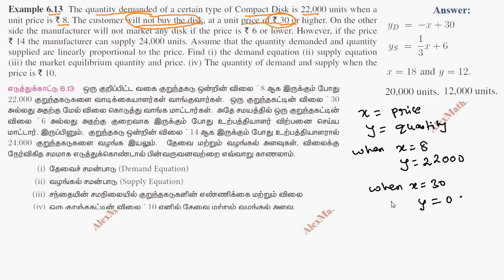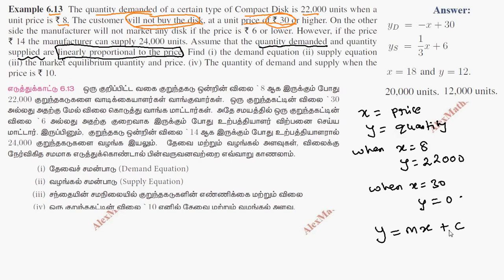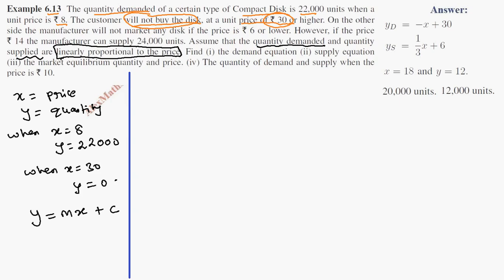If we take the two conditions, we will substitute into the equation. Assuming that the quantity demanded is linearly proportional to the price, this is a straight line. The straight line is in the form Y = MX + C. We substitute the first condition — when X=8, Y=22,000 — giving us: 22,000 = 8M + C. This is the first equation.